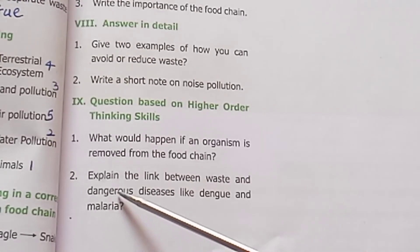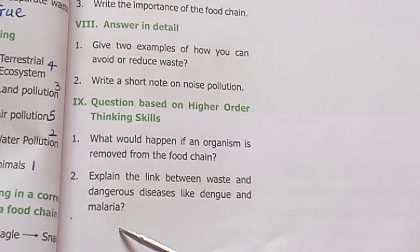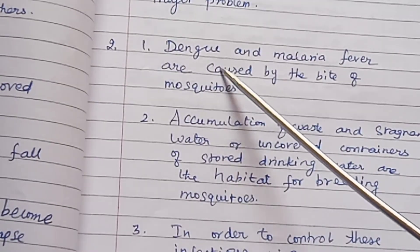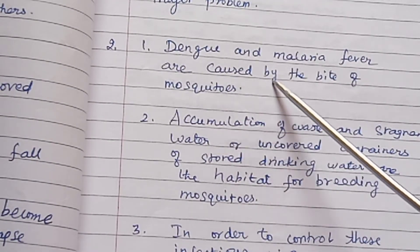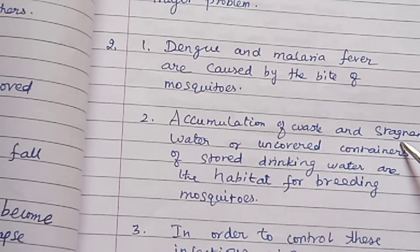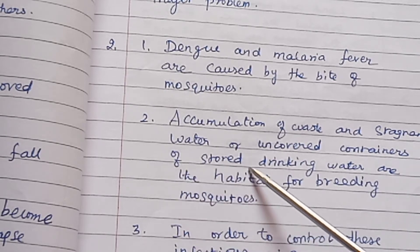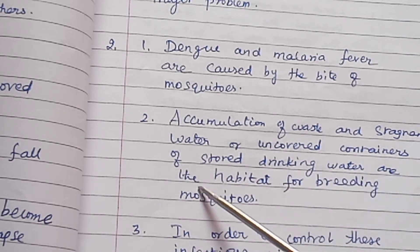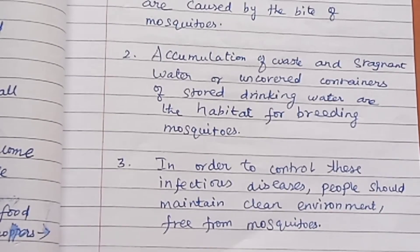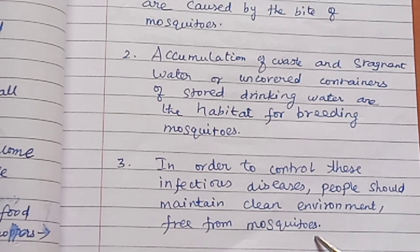Explain the link between waste and dangerous diseases like dengue and malaria. Dengue and malaria fever are caused by the bite of mosquitoes. Accumulation of waste and stagnant water in uncovered containers are the habitat for breeding mosquitoes. To control these infectious diseases, people should maintain a clean environment free from mosquitoes.